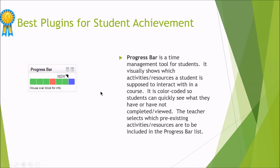One plugin we really like is the Progress Bar. This is a block that goes up in the corner on one side of the page. The instructor can specify which activities should be listed in the progress bar. Anything completed in that list shows up as green, and you can put in due dates. A 'now' symbol indicates what should have been completed before now versus after. If an activity is red, it has not been completed. This is a great tool to keep students engaged and gives them a visual view of how well they are doing.